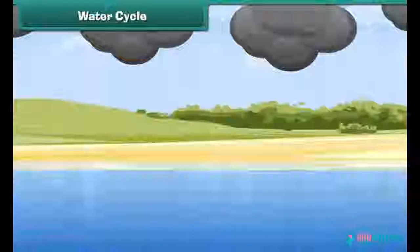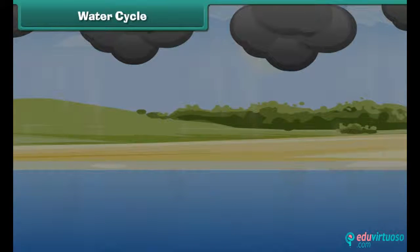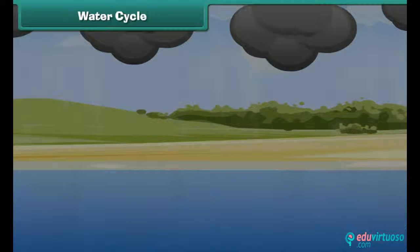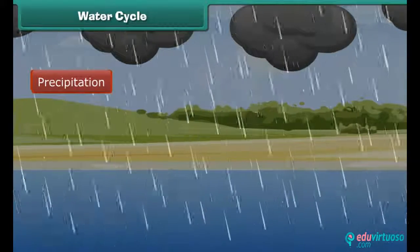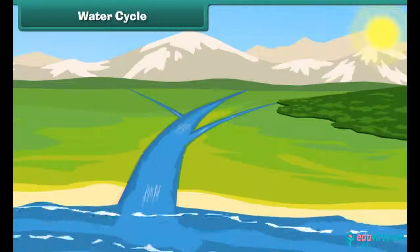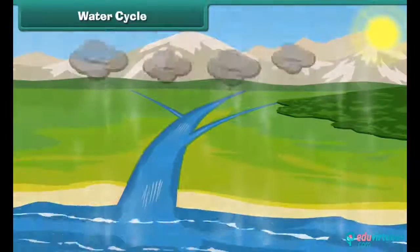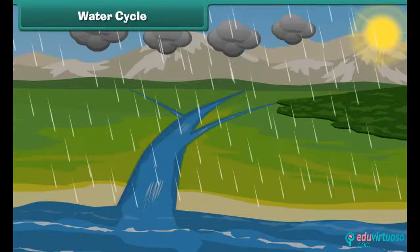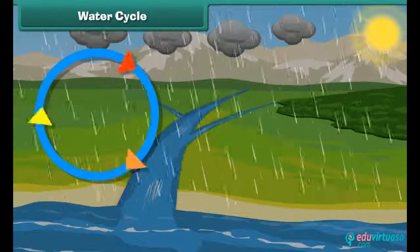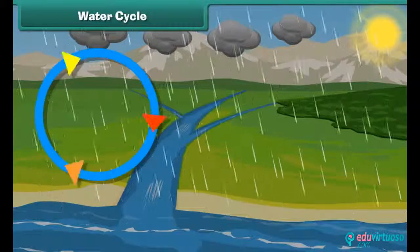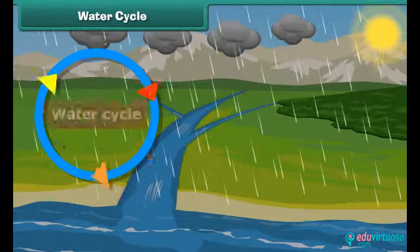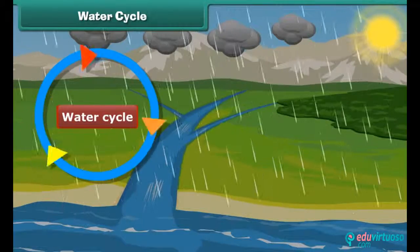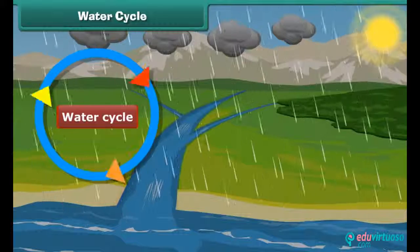When the water molecules in clouds begin to collect, they form bigger droplets and fall down as rain, snow, or hail depending upon the temperature. This is called precipitation. Finally, the water reaches the water bodies and gets collected there. Water is constantly cycling from land to air and back to land again. This process is known as the water cycle. Therefore, water on our earth will never come to an end.